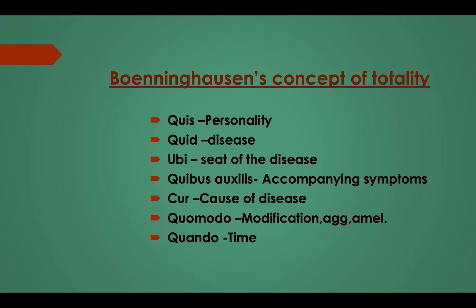Boney Hussain's concept of totality: Q's Personality, Q'd Disease, O'Bee — Seat of the Disease, Cubus/Oxiris — Accompanying Syndrome, Q'd Cause of Disease, Komodo — Modification/Aggravation and Amelioration, and Kuwando means Time.